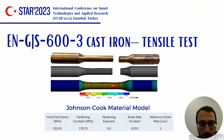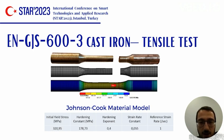The Johnson-Cook material model is used to simulate the dynamic behavior of the material, and its usage in milling and machining simulations is very common. The stress distribution, shown in the third image, depicts maximum stress before failure and is consistent with the tensile test.